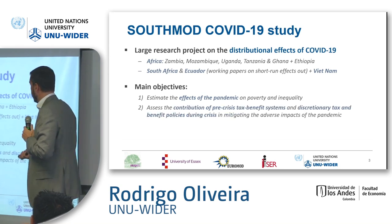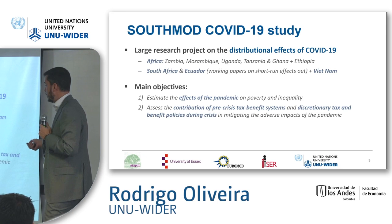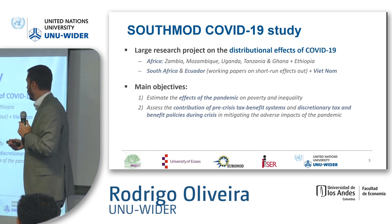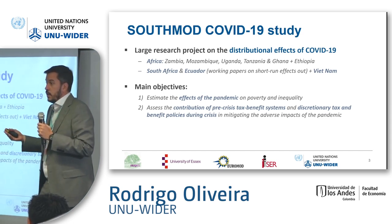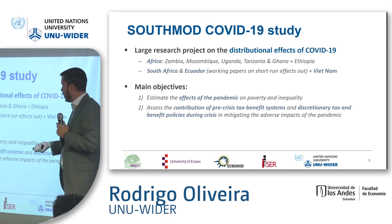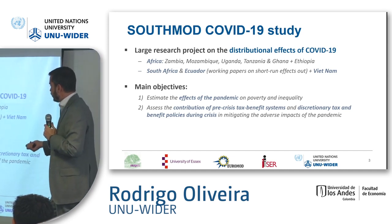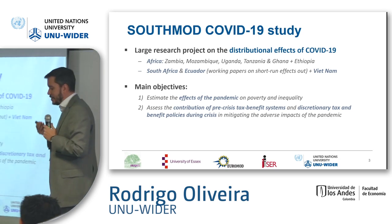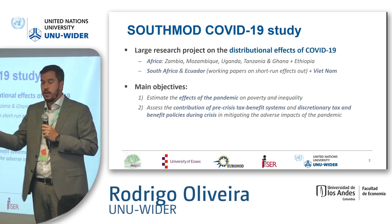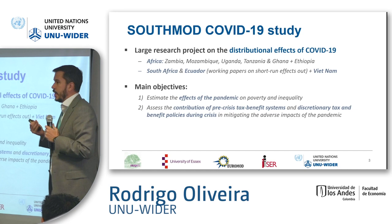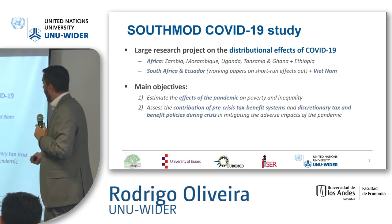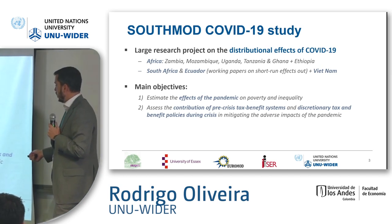The main objectives of this study are to estimate the effects of the pandemic on poverty and inequality, but the main contribution is the use of micro-simulation to assess the impact of the existing tax and benefit system — for example, unemployment benefits or additional cash transfers created during the pandemic — to see how those policies mitigate or do not mitigate the adverse impacts of the pandemic.